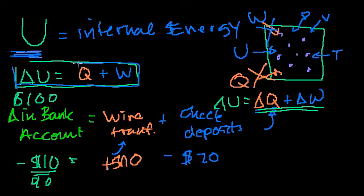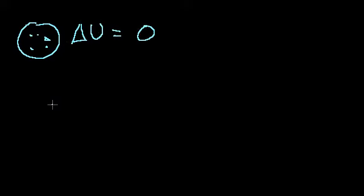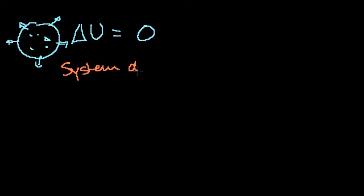So with that said, this is our definition. Let's do a couple of simple problems. My real goal is to make you comfortable with when to use plus or minus on the work — and the best way is not to memorize the formula but to think about what's happening. Let's say I have a balloon as my system, and there's no change in internal energy — delta U is 0. By expanding a bit, the balloon did some work — let's say the system does 10 joules of work.